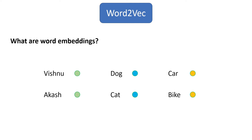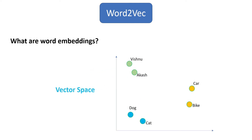If we take these word embeddings and project them in vector space, this is how it would look like. The distance between Vishnu and Akash is very less because they are related to each other, whereas the distance between Vishnu and car is very high because they are not related to each other. This kind of vector representation is what word embeddings are.